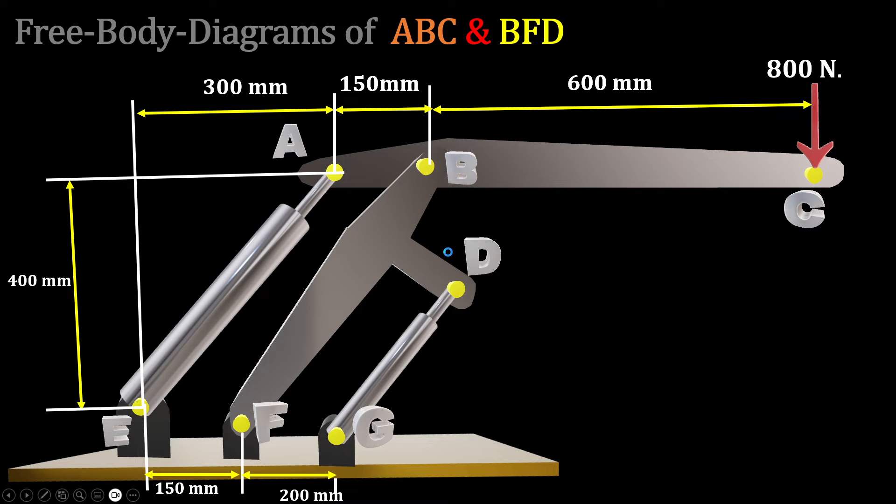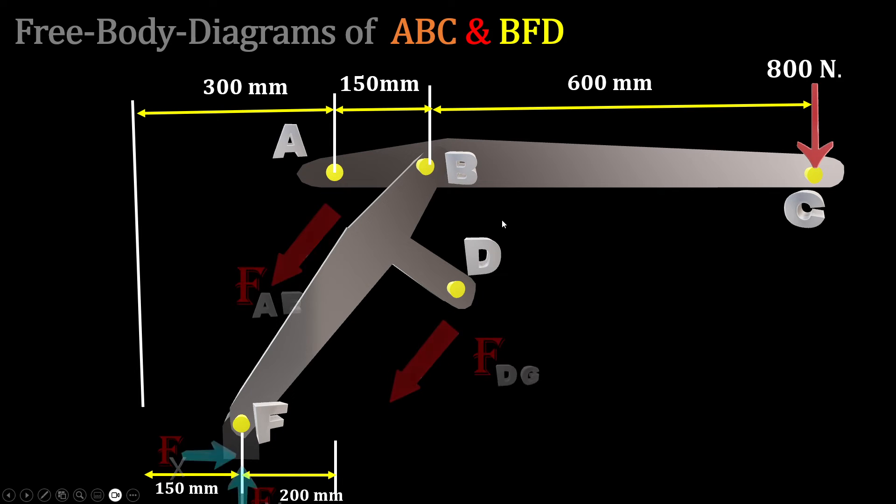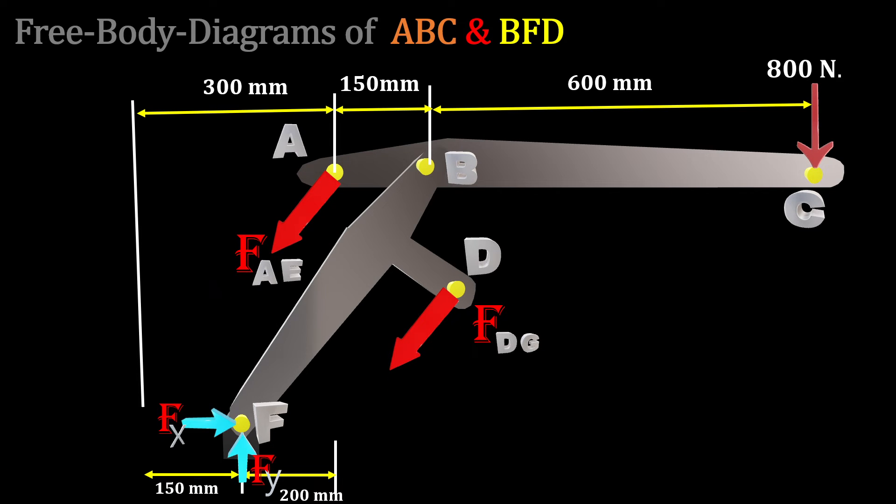For the other part, we'll jump to the free body diagrams of ABC and BFD together, so the robotic arm ABC and this part BDE. If we consider them together, we have such forces. The summation of moment about F this time goes to zero, which gives us the second force FDG.